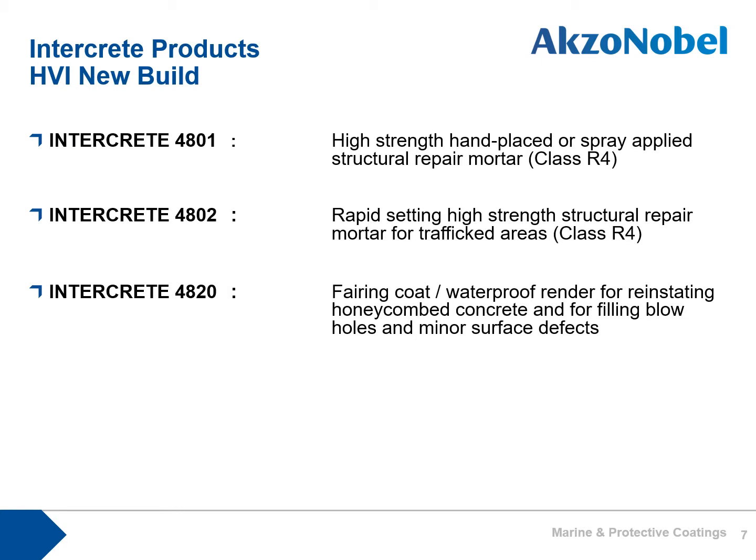Looking briefly at the products used in new-build high-value infrastructure: Intercreate 4801 is our high-strength, hand-placed or spray-applied structural-grade repair mortar. Where rapid setting and rapid hardening is required, Intercreate 4802 is the obvious choice. Intercreate 4802 is used as a fairing coat or a waterproof render, or for reinstating honeycombed concrete and filling minor blowholes and other surface defects.